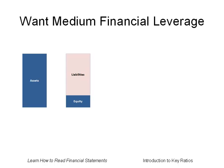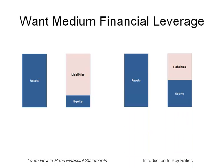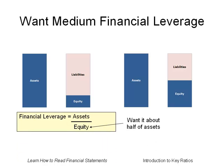Consider the diagram here: the company has financed its assets with more liabilities than equity, and as a result, the company has high risk. Now consider the diagram on the right: the company is less risky because liabilities and equity are roughly 50% each. Financial leverage is assets divided by equity. You want equity to be roughly 50% of the assets, which would result in financial leverage of 2. The assets would be twice as big as the equity, meaning equity and liabilities would each be 50% of the assets.